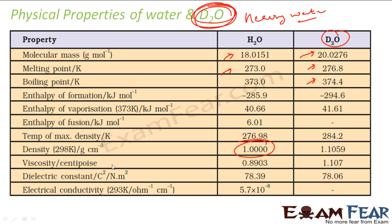The density of water is 1. The dielectric constant is 78.39. The enthalpy of formation is minus 285.9 kJ/mol. The enthalpy of vaporization is 40.66 kJ/mol, and the enthalpy of fusion is 6 kJ/mol.